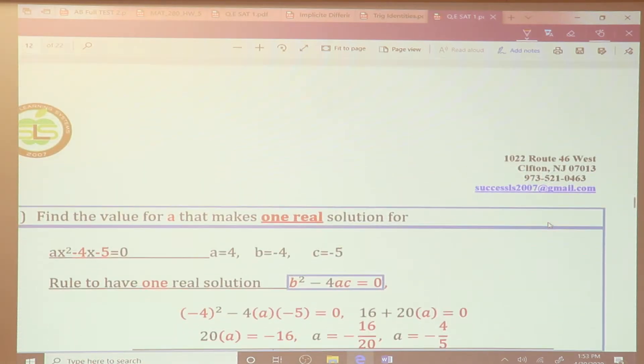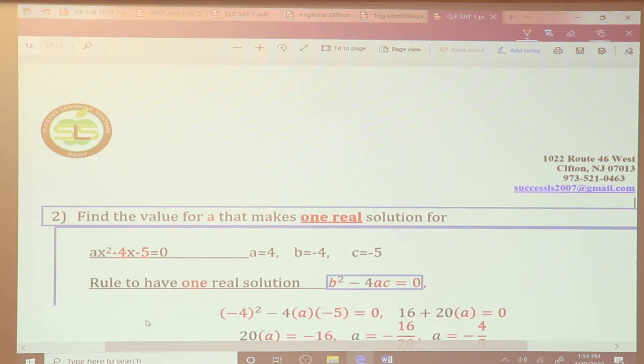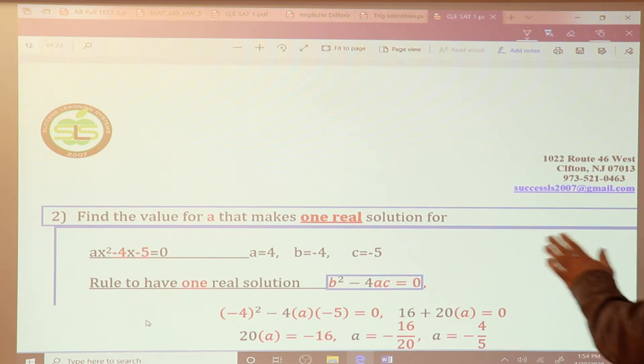One more idea. What we have here? Find a value for A that makes one real solution. What does this mean? To have one real solution, B squared minus 4AC equals 0. Can you raise your voice, please? The rule to have one real solution would be if B squared minus 4AC equals 0. Then that's what you have to apply, right? That's what you have to apply. You have to have the same thing.